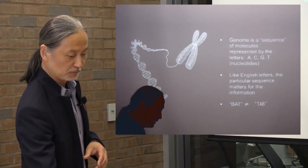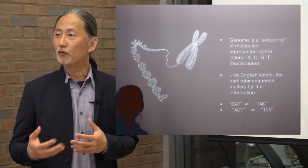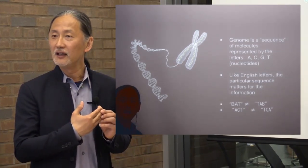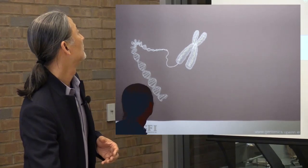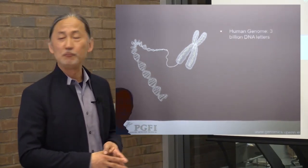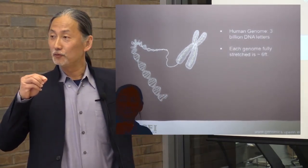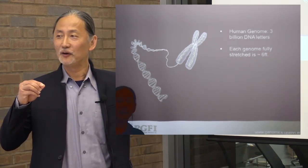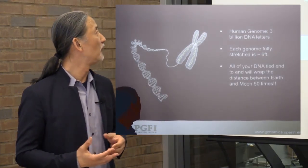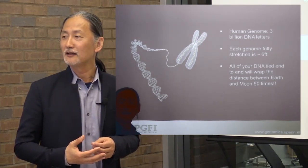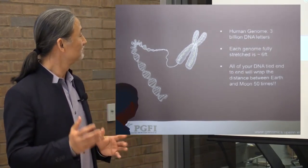The particular sequence of the letters matters for the information content of the genome. Just as BAT is different from TAB in English, ACT is different from TCA. This is why we want to know the sequence of the DNA — because decoding the sequence tells us a lot about what information is contained in the genome. The human genome is about three billion DNA letters, and if you stretched it out fully, it's about six feet long, wound up tightly in each one of our cells. If you take all the DNA in your body end-to-end, it actually goes to the moon and back 50 times.